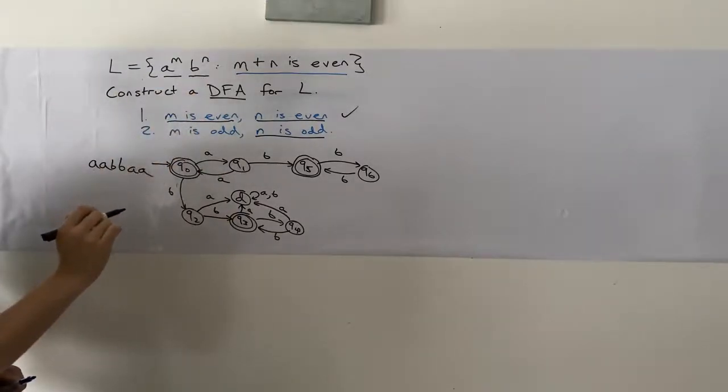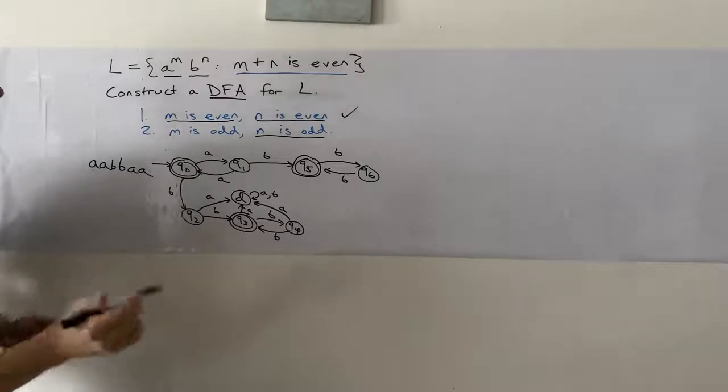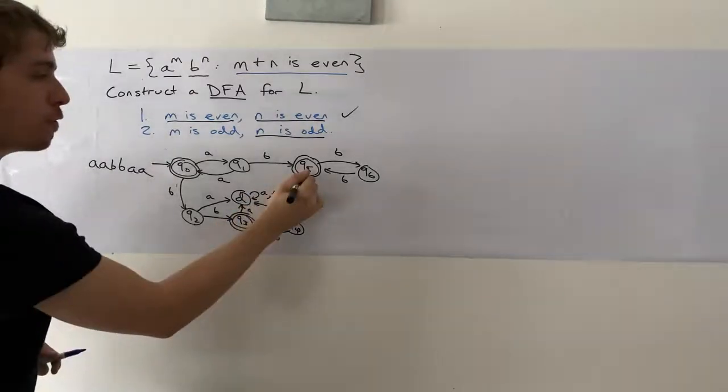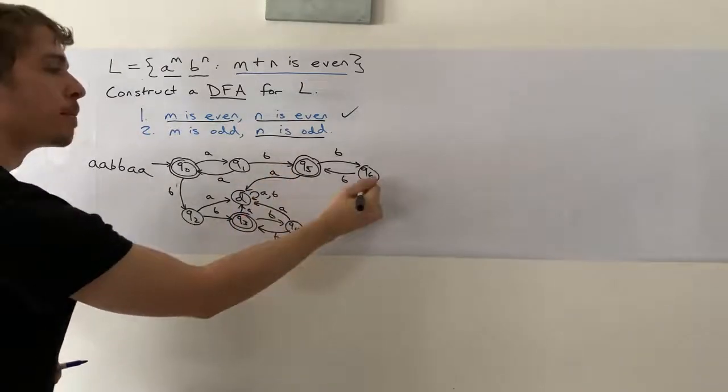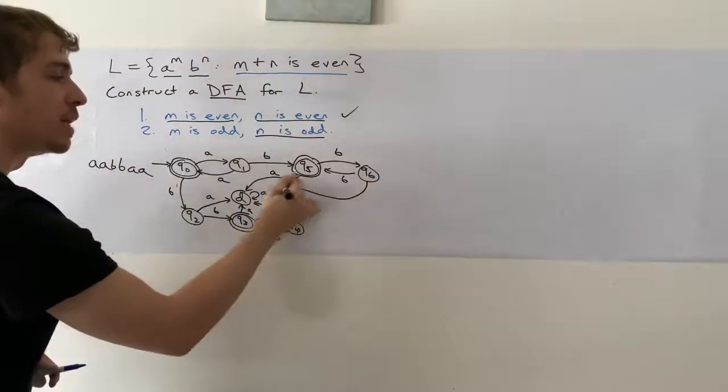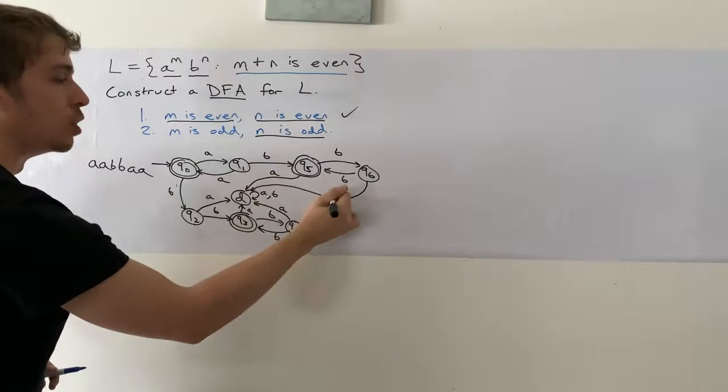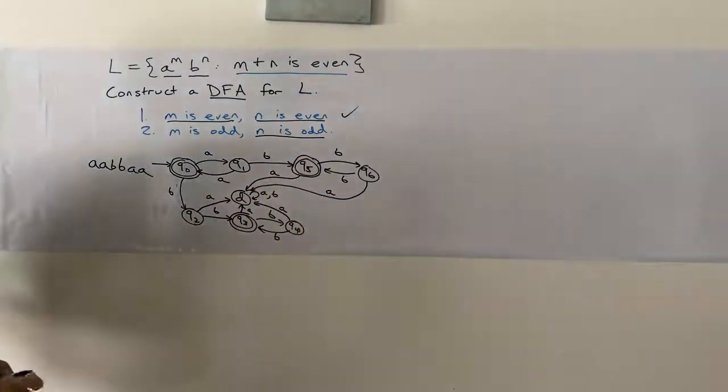So from Q5, we're going to have a transition on A. And from Q6, a transition on A too. And that completes this DFA.